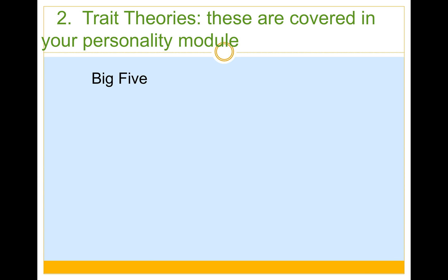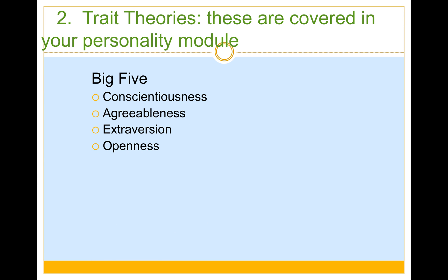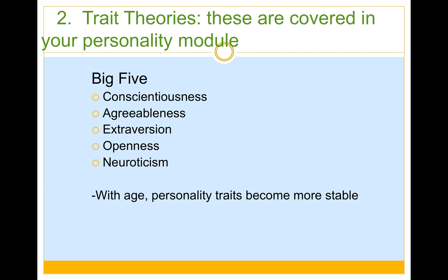Trait theory is covered in your personality module, so I'll just put the Big Five up here for reference: conscientiousness, agreeableness, extroversion, openness, and neuroticism. These are just descriptions of how people are — trait theory doesn't try to explain where traits come from; it just tells you your standing on each one. With age, these traits become more stable, and they're typically pretty stable from college age all the way into your 60s. These trait measures predict average behavior, and they're better at predicting differences among individuals than at describing one person.